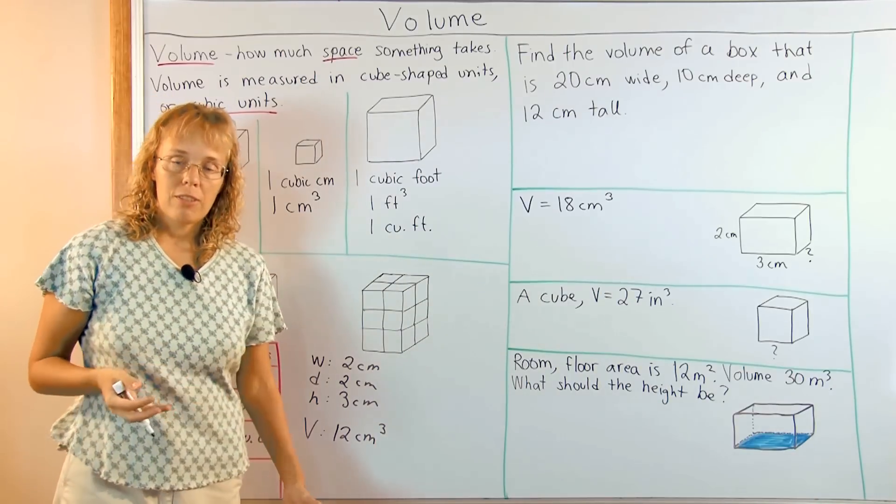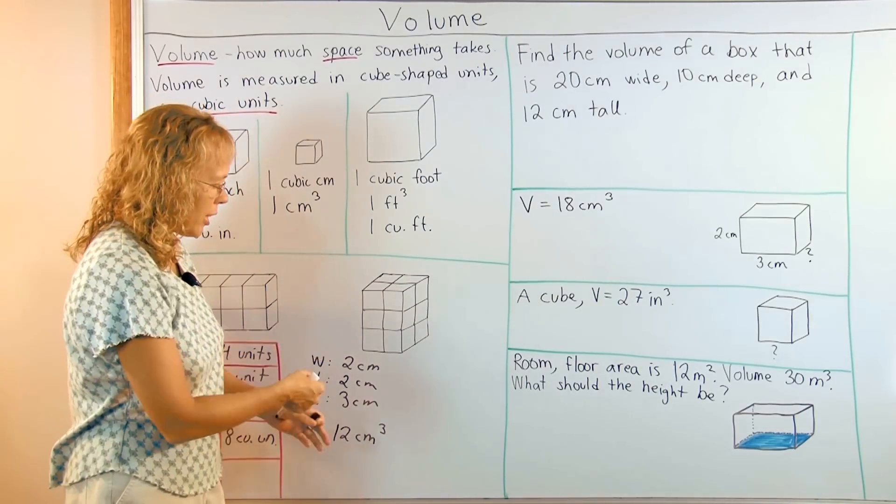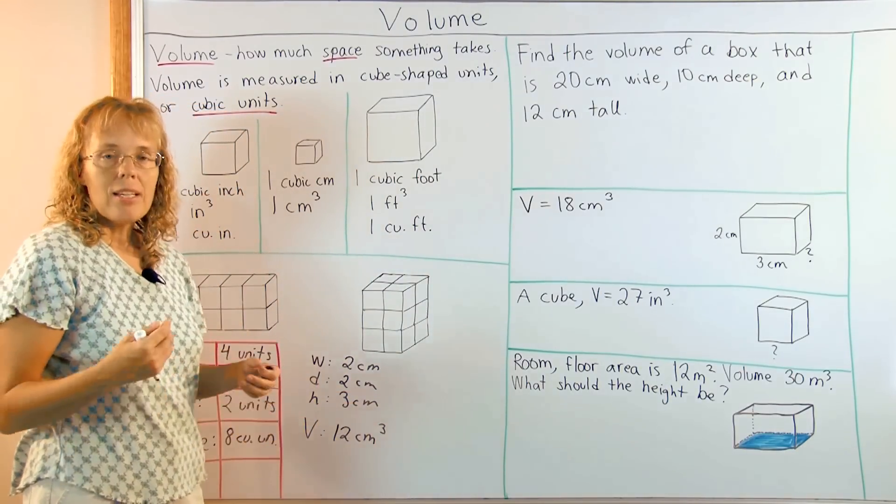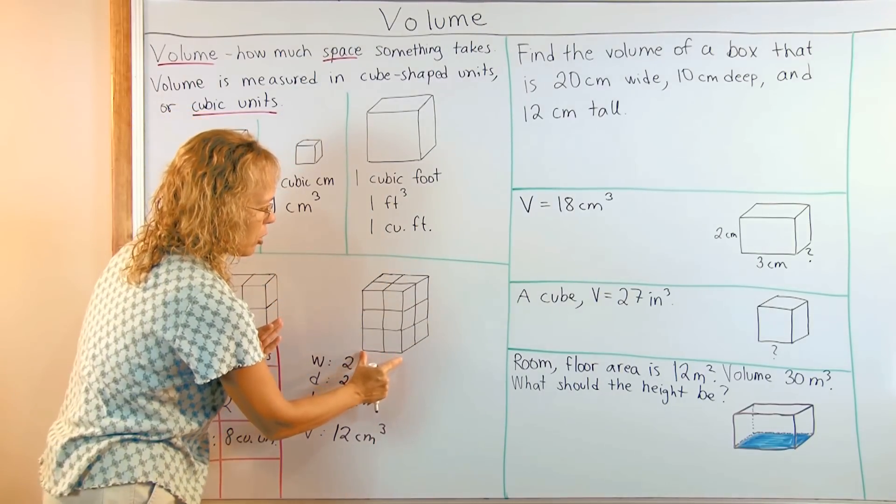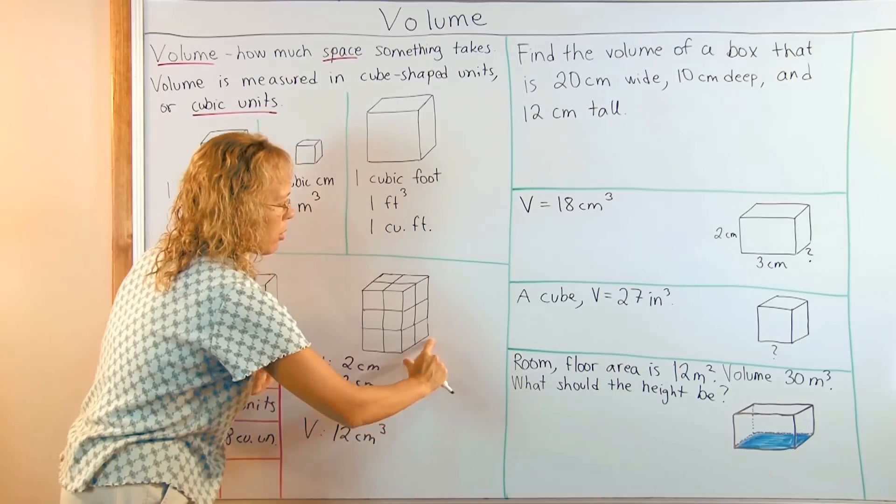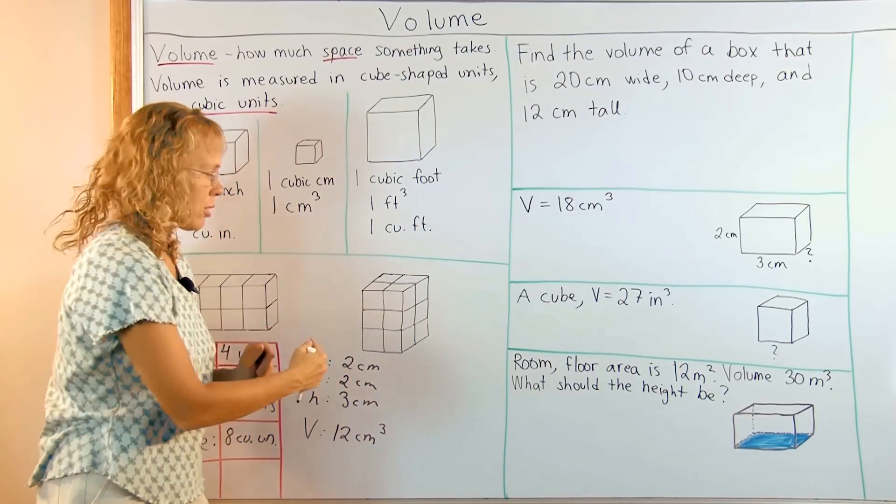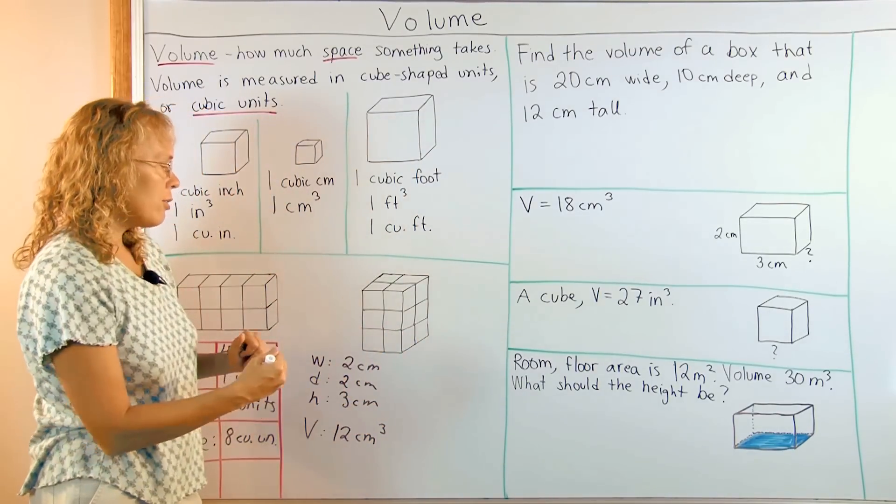And like you saw with the blocks, you can also think of this multiplication this way. Think first of the bottom layer of this whole thing. In the bottom there's two blocks times two blocks. There's just four blocks on the bottom, right?